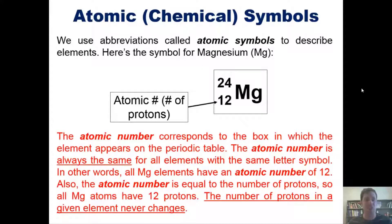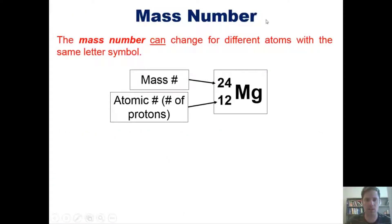The atomic number is equal to the number of protons that element has, which means all magnesium atoms have 12 protons. You can't change the number of protons without changing the identity of the element. Thus, the number of protons in a given element never changes. The mass number, which is this number in the upper left-hand corner of this box, can change for different elements with the same letter symbol. The mass number equals the number of protons plus the number of neutrons.